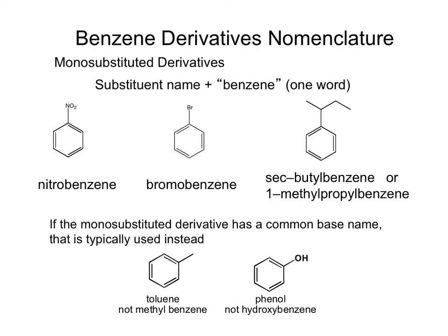It's all one word. For example, if you see a nitro group, it becomes nitrobenzene. Bromine becomes bromobenzene. This one is a common name — secbutyl — so you could say secbutylbenzene. Or since the point of attachment has a 3-carbon chain off of it, you could say 1-methylpropylbenzene as well.